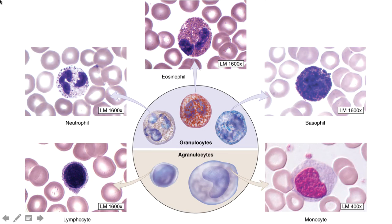Only about 45% of our blood is actually cellular. Of that 45%, almost all of it — roughly 44% — are red blood cells, or erythrocytes. White blood cells as a whole make up less than 1% of blood. So as you look at slides, most of what you see will be red blood cells, and white blood cells will often be very difficult to find. Some are so infrequent you may have to look through multiple slides to find them.